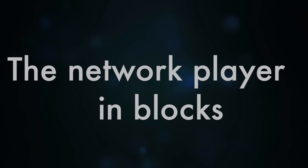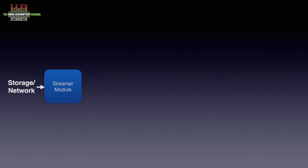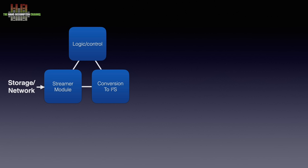There are various architectures for network players. Some rely on server software on a computer or NAS — like DLNA, Rune, or Squeezebox — which index music and allow searching, sorting, and playlist creation. Others, like Sonos and Bluesound, are self-indexing, reading content directly from the storage medium. A network player connects storage either directly via USB or over the network. That storage holds music you've ripped or downloaded. The player fetches music files and usually converts the digital signal to I2S. Logic and control circuits handle user interaction, communicate with the remote app, and display metadata.